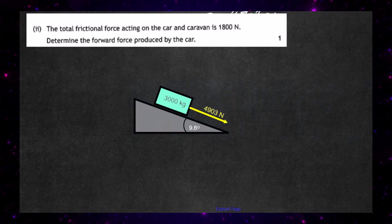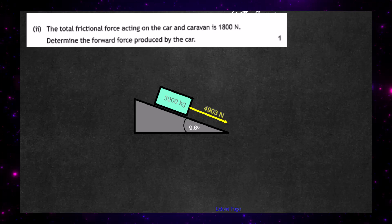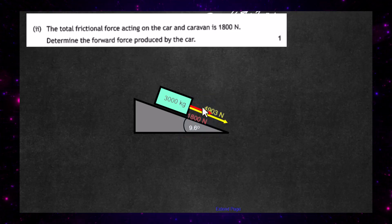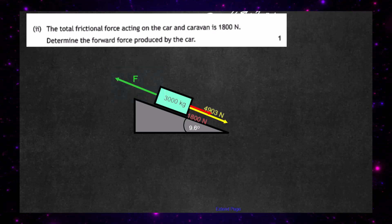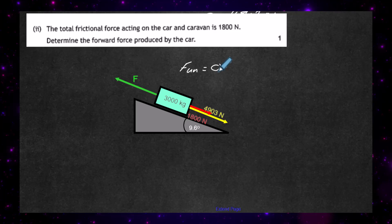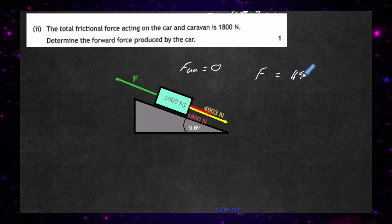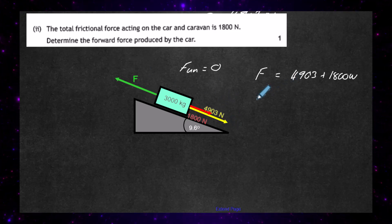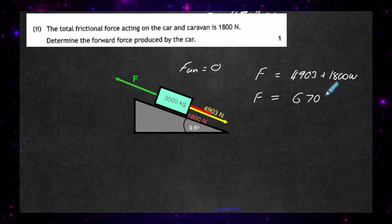Looking at the diagram, the weight component parallel to the slope acting down is 4,903 newtons, and friction also acts down the slope at 1,800 newtons. Since the car moves at constant velocity, the unbalanced force is zero, so all upward forces must equal all downward forces. The forward force F equals 4,903 plus 1,800, giving an answer of 6,703 newtons.